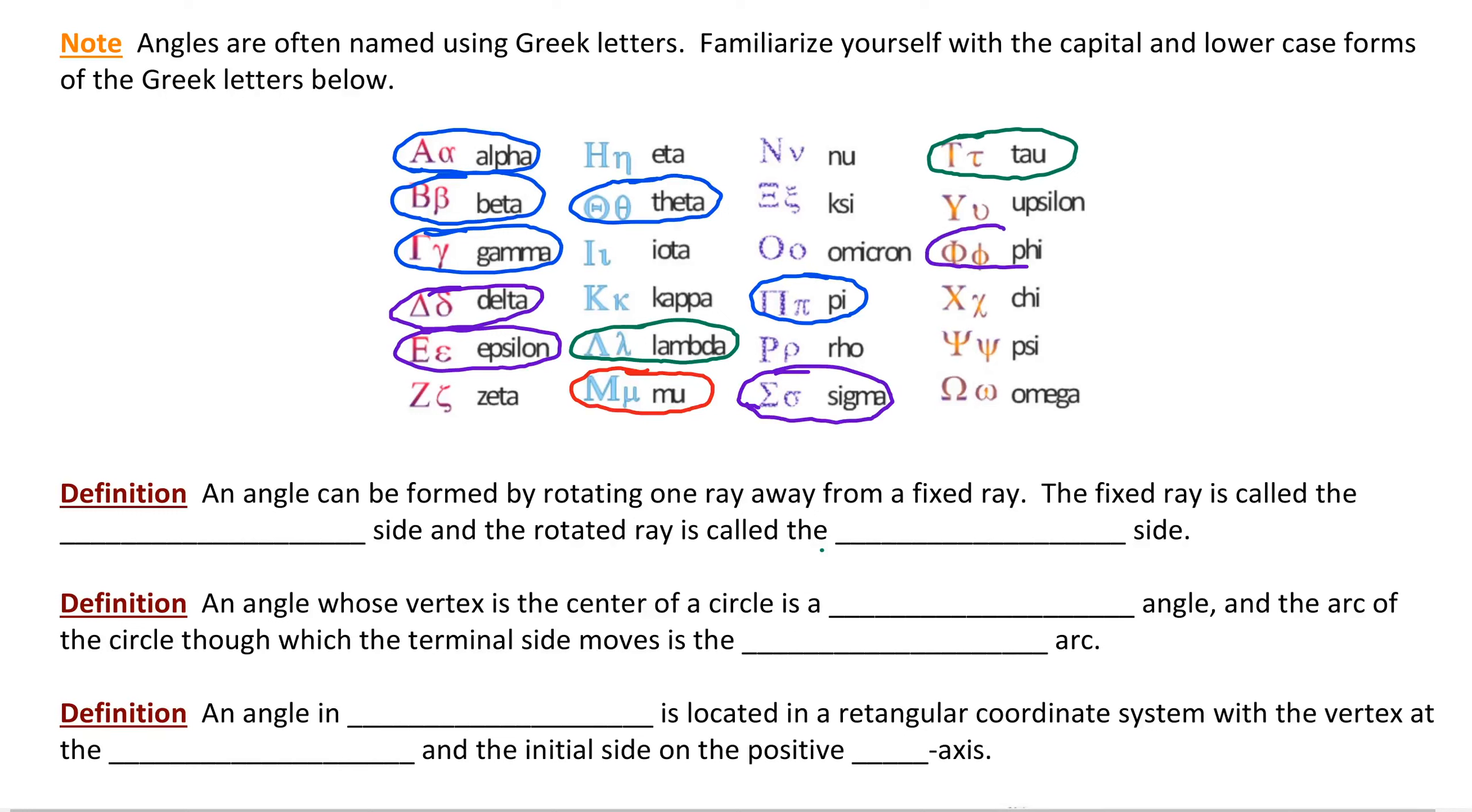Phi, or phi, and psi are often used in calculus, specifically Calculus 3. And the lowercase omega will be used in trigonometry, in physics, and also in differential equations. So it's a good idea to be familiar with these Greek letters and how to write them.